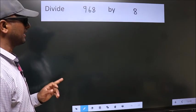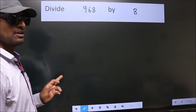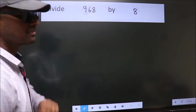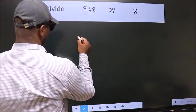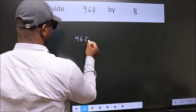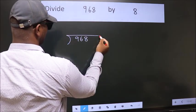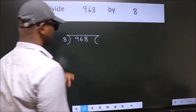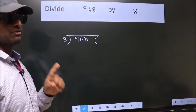Divide 968 by 8. To do this division, we should frame it in this way: 968 here, 8 here. This is your step 1.